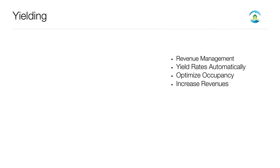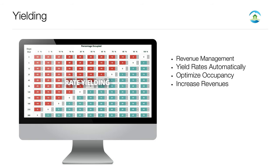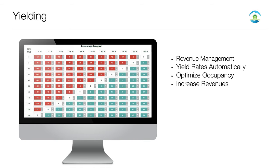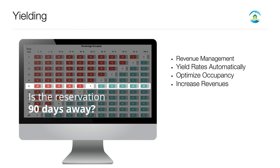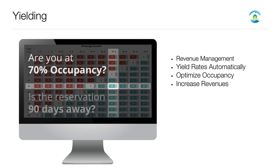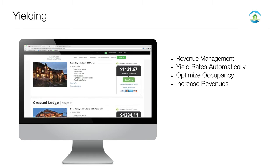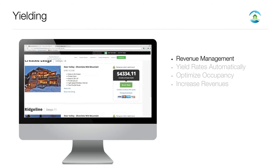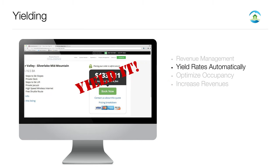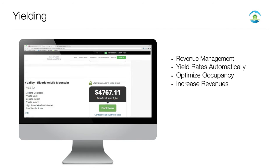Streamline offers automated revenue management, often referred to as rate yielding. This gives you the opportunity to automatically adjust your rates based on occupancy and days until check-in. The system instantly identifies the number of days until a reservation checks in, then calculates the current occupancy for the dates searched by the guest. This allows Streamline to automatically adjust prices to maximize profits and maximize occupancy.